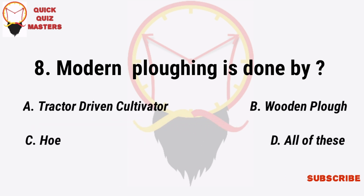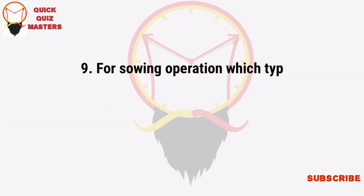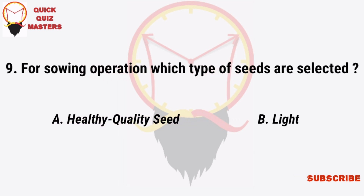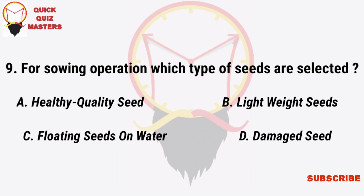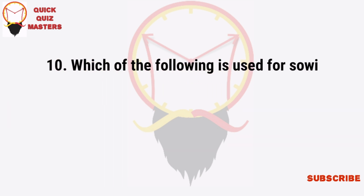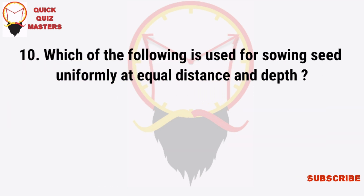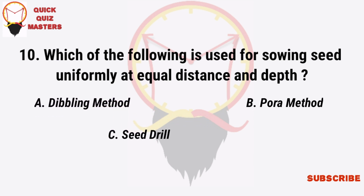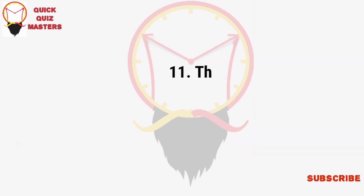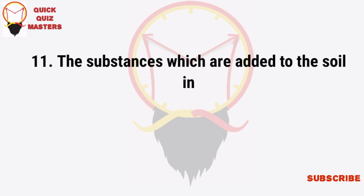For the sowing operation, which type of seeds are selected? Healthy quality seeds, lightweight seeds, floating seeds on water, or damaged seeds. Which of the following is used for sowing seeds uniformly at equal distance and depth? Drilling method, pura method, seed drill, or broadcast method.